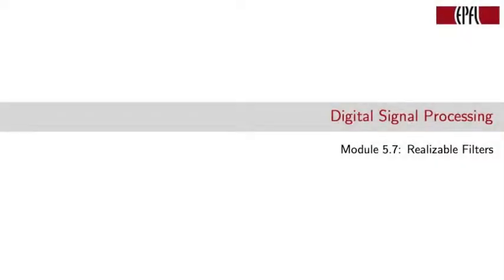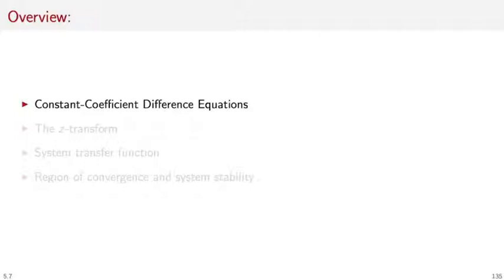Welcome to module 5.7 of Digital Signal Processing, in which we will talk about realizable filters. In the previous module, we took our first stab at the problem of filter design, taking a very intuitive approach, and we quickly realized there are some drawbacks — we cannot control certain important parameters such as the maximum error in the pass band. Before we study more sophisticated methods, we need to better describe the type of filters that we can actually implement in practice. The most general type of linear time invariant filter is described by a constant coefficient difference equation, and to analyze these equations we need the Z-Transform.